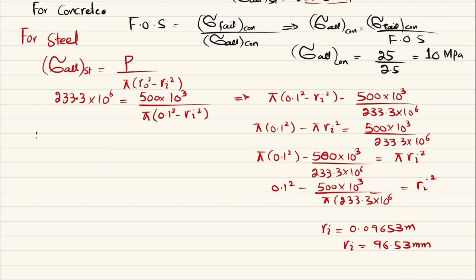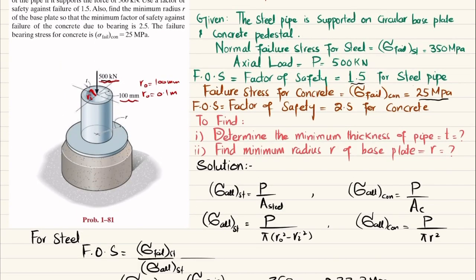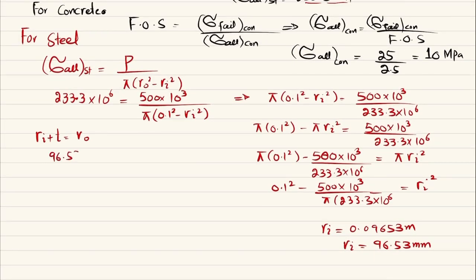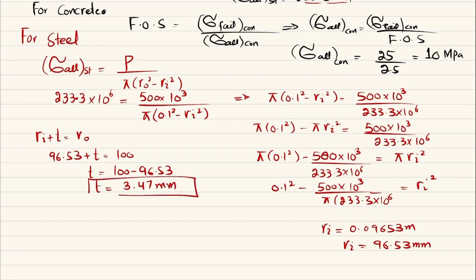Now, r_i + t = r_outer. So 96.53 + t = 100 mm, which gives t = 100 − 96.53 = 3.47 mm. This is the minimum thickness of the steel pipe, which is the answer to the first part.